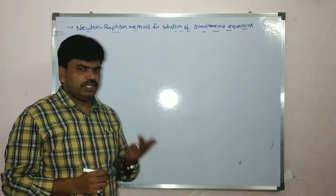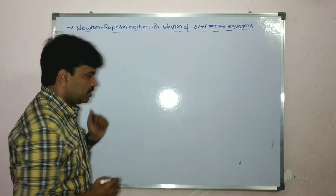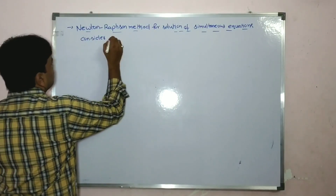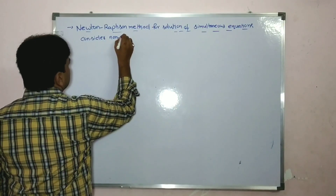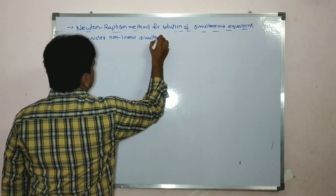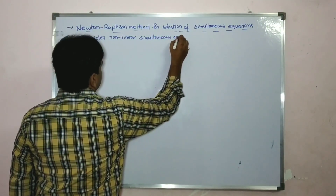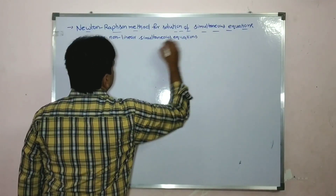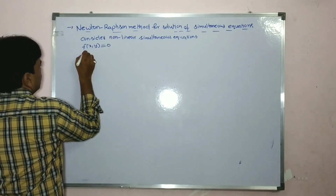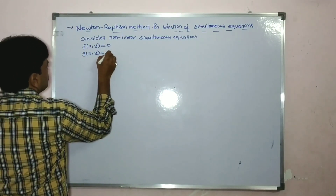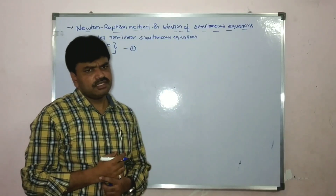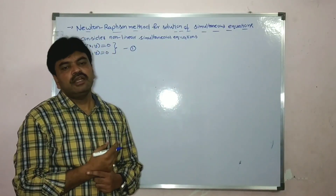There are two or more equations. Consider non-linear simultaneous equations. Say, these two: f of x comma y is equal to 0, and g of x comma y is equal to 0. Say, this is equation one. Non-linear means other than degree one — linear means degree one, non-linear means other than one.